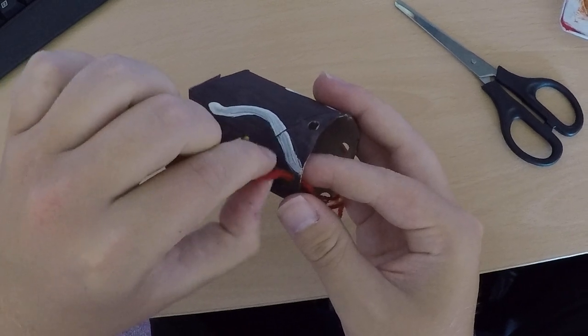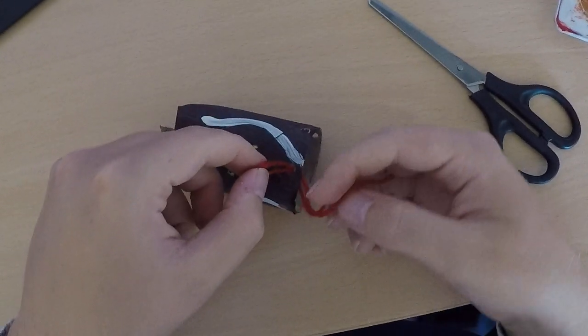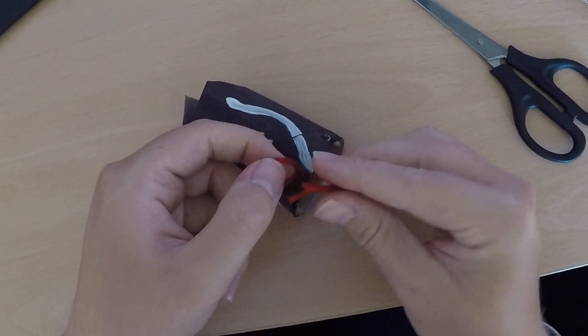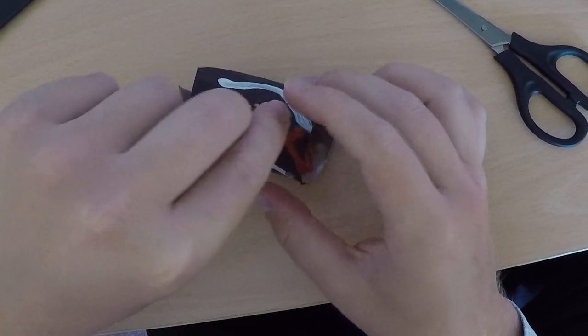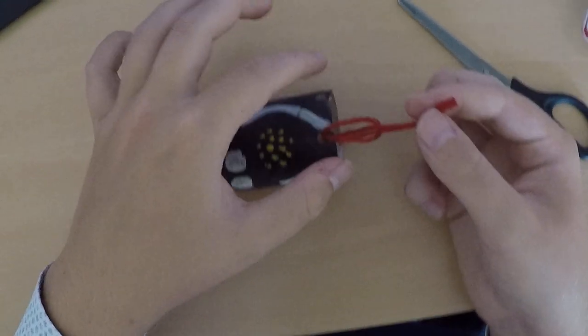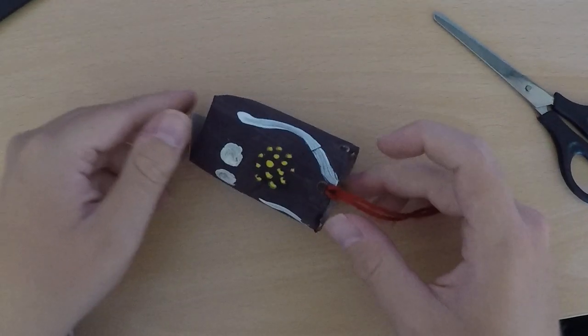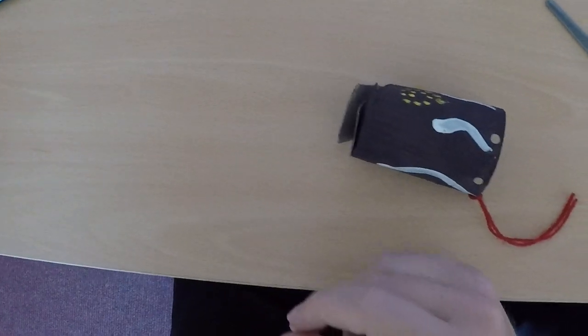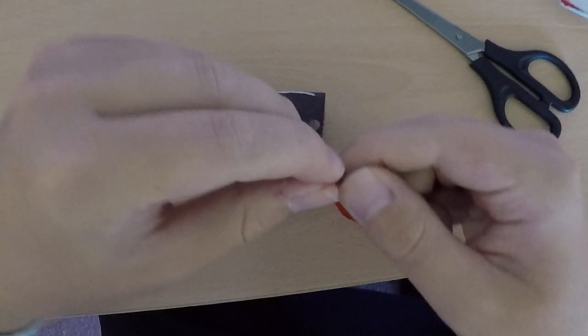Put it through there a little bit, and then the open ends, these ones here, you're just going to poke through that loop and pull it tight so that it hangs down. There's one. Again I'm going to fold it in half, pull my loop tight.